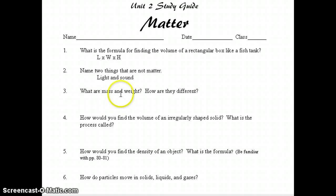They are different because mass will always stay the same, and weight varies depending on the gravitational force. So if you were to go to the moon, your mass would remain constant, would remain the same, and your weight would only be one-sixth of what you weigh here on Earth, because you have one-sixth of the gravitational force. Number 4, how would you find the volume of an irregularly shaped solid, and what is the process called? You could drop it in a graduated cylinder and see how far the water goes up. The process is called water displacement.